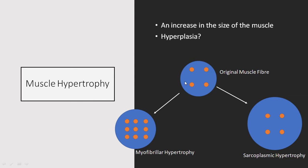So if this is an original muscle fiber, this big circle is the muscle fiber and these little orange circles in the middle are the myofibrils. They're the smallest components of the muscle fiber and they're what actually create contraction — they're the contractile units of the muscle fiber.